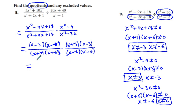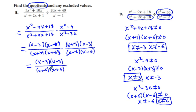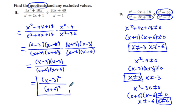We're going to have quantity x minus 3 times quantity x minus 3, over quantity x plus 6 times quantity x plus 6. We can rewrite this as x minus 3 squared over quantity x plus 6 squared. This is our answer, and we have all four excluded values.